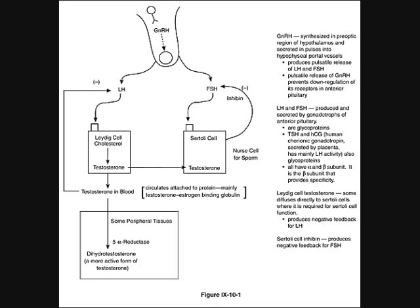LH has only one target tissue: the Leydig cells. The Leydig cells produce testosterone, which is required for normal Sertoli cell function and eventually for normal spermatogenesis — the creation of sperm. In peripheral tissue, testosterone is converted to dihydrotestosterone, a more active form, via the enzyme 5-alpha reductase. Circulating testosterone provides a negative feedback loop for LH, but not for FSH. Inhibin, created by the Sertoli cells, inhibits FSH.